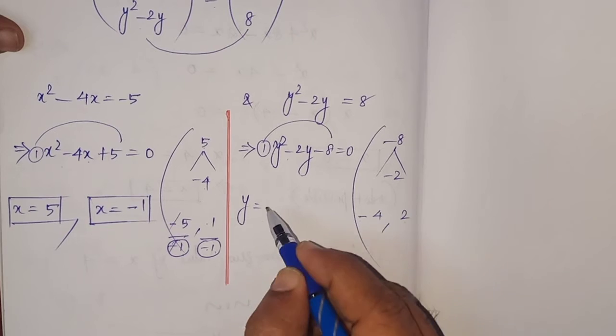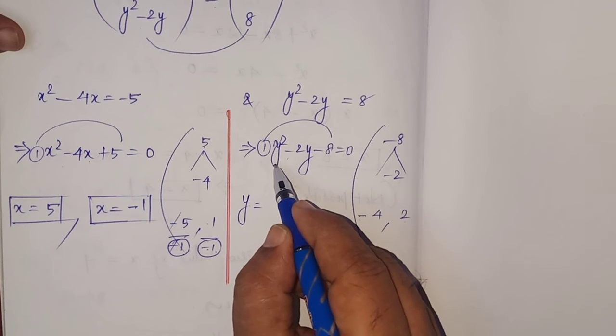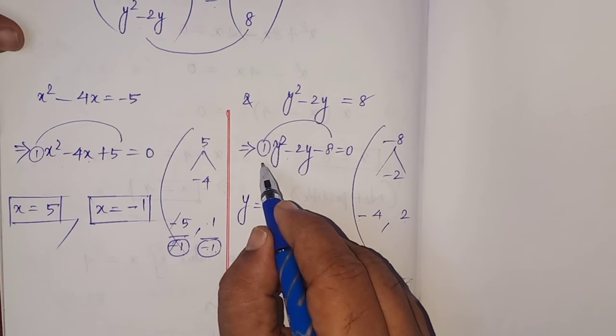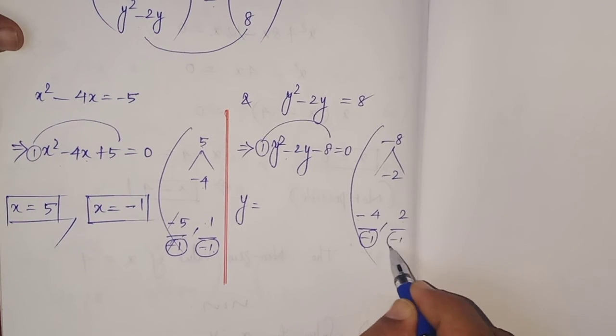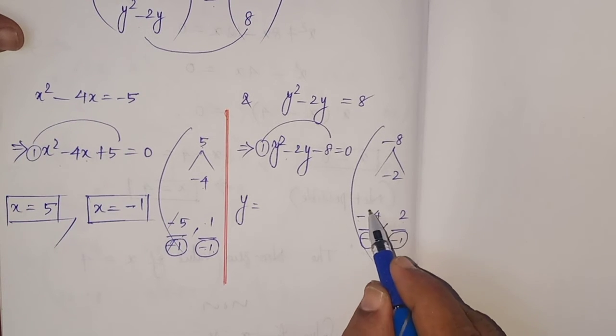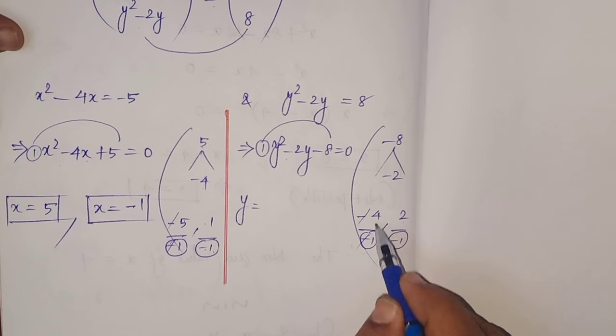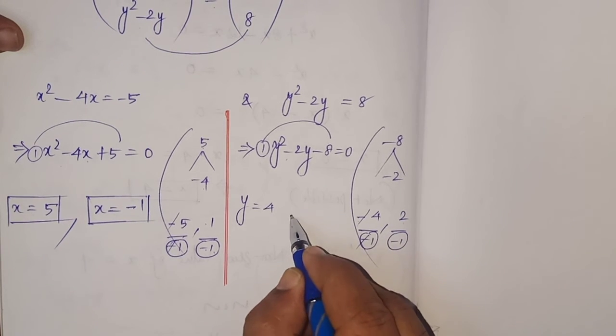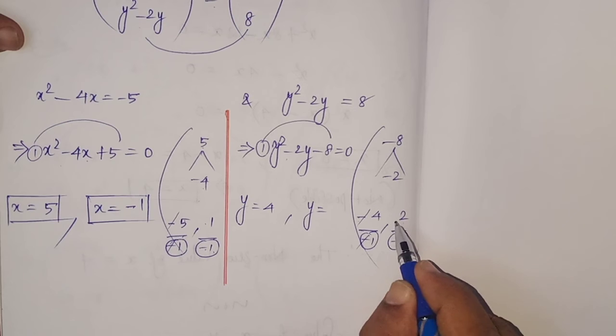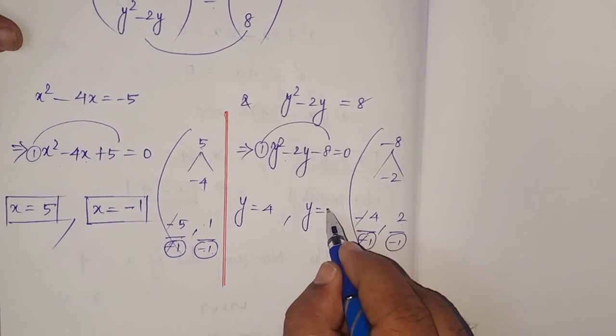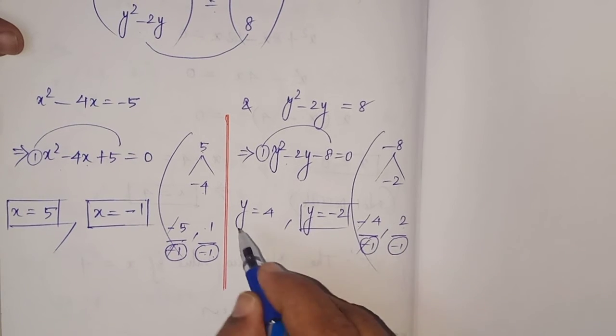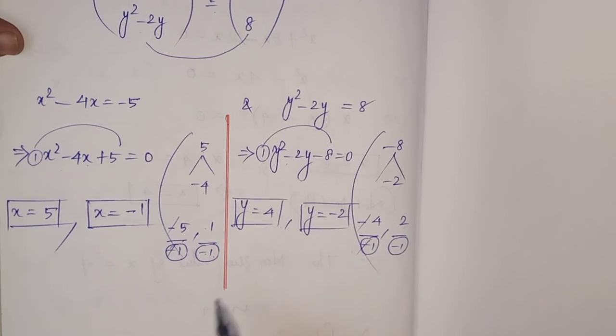Now, for getting the values of y, we have to consider the coefficient of y squared. What is here? 1. Change the sign, write minus 1 in the denominator. Minus minus get cancelled, 4 divided by 1, that is equal to 4, and y that is equal to plus divided by minus, minus, 2 by 1, that is equal to 2. We have y that is equal to minus 2, and y that is equal to 4.